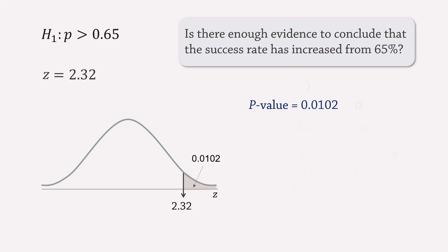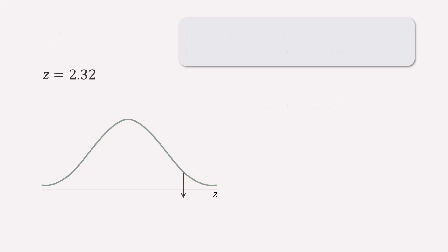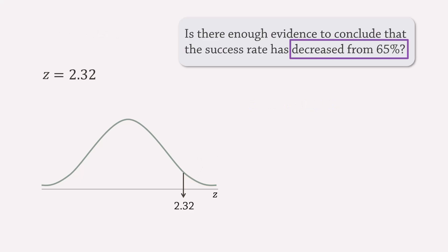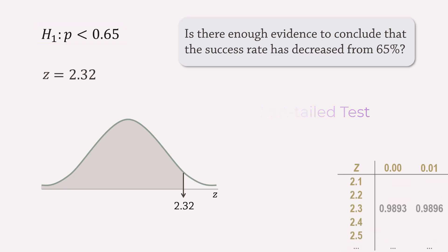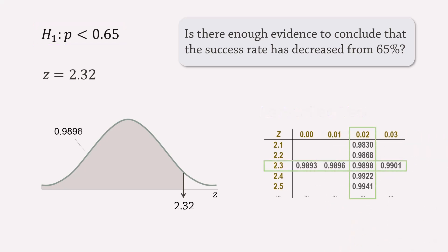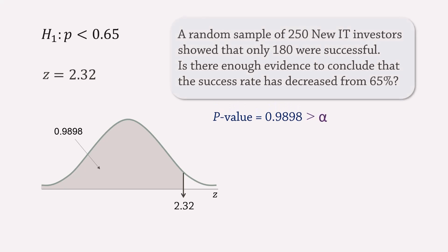Now, suppose we were to test if the success rate has significantly decreased from historical values. Then the alternative hypothesis will be p less than 0.65, because of the keyword 'decreased.' This will be a left-tailed test. Therefore, the p-value will be the area to the left of the test statistic, which is 0.9898. This p-value is much larger than our conventional alpha levels, so the null hypothesis will not be rejected.